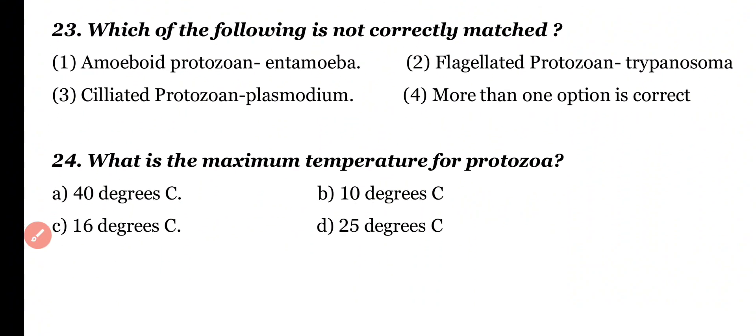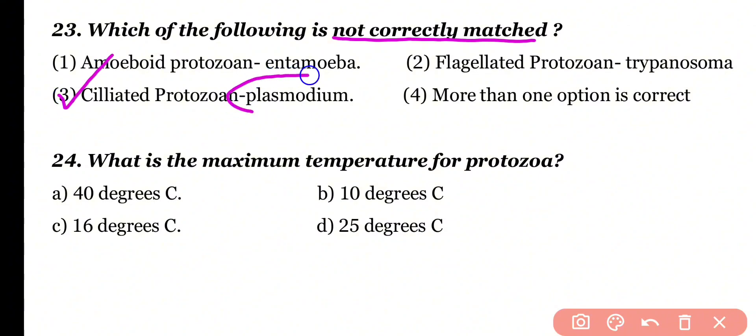Question number 23: Which of the following is not correctly matched? Amoeba as an amoeboid protozoan example, Entamoeba as a flagellated protozoan example, Trypanosoma as a flagellated protozoan example, or Plasmodium as a ciliated protozoan example? The incorrectly matched option is 3 — Plasmodium is not a ciliated protozoan; it belongs to class Sporozoa, which has no locomotory organ.